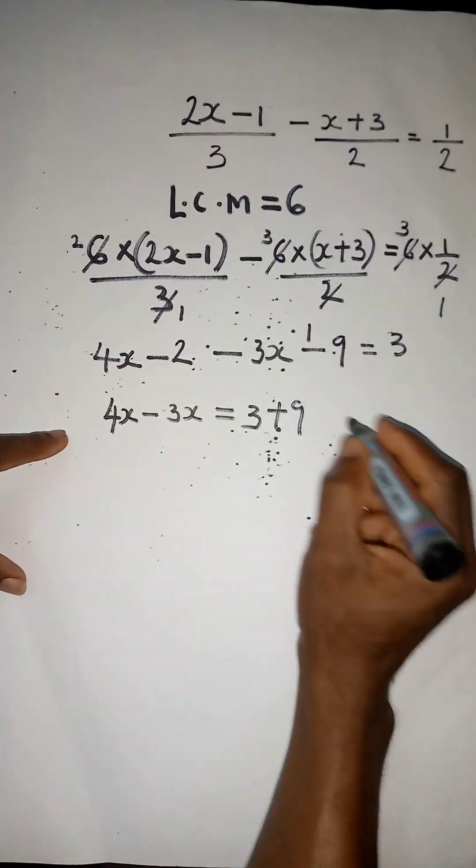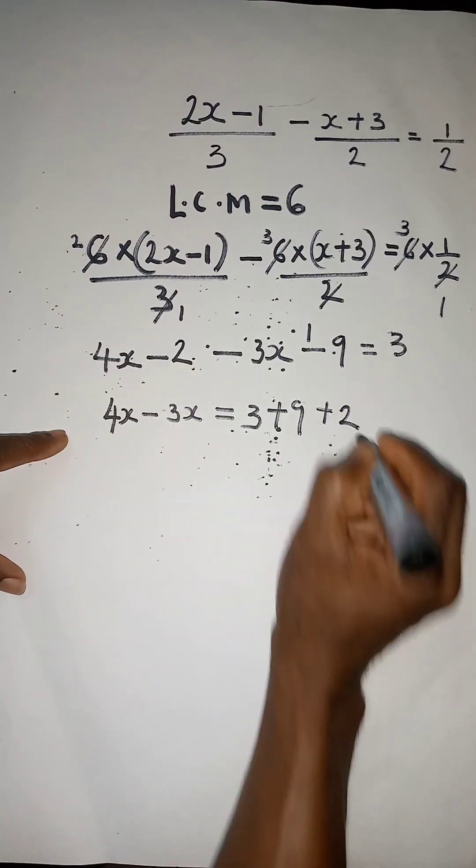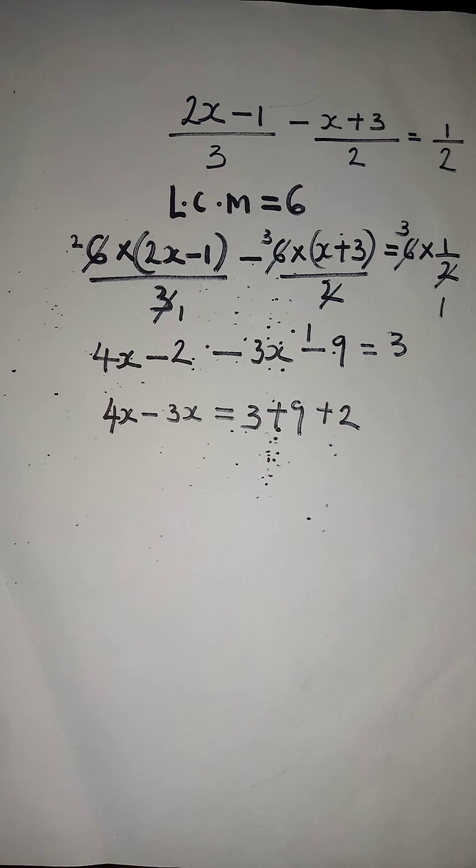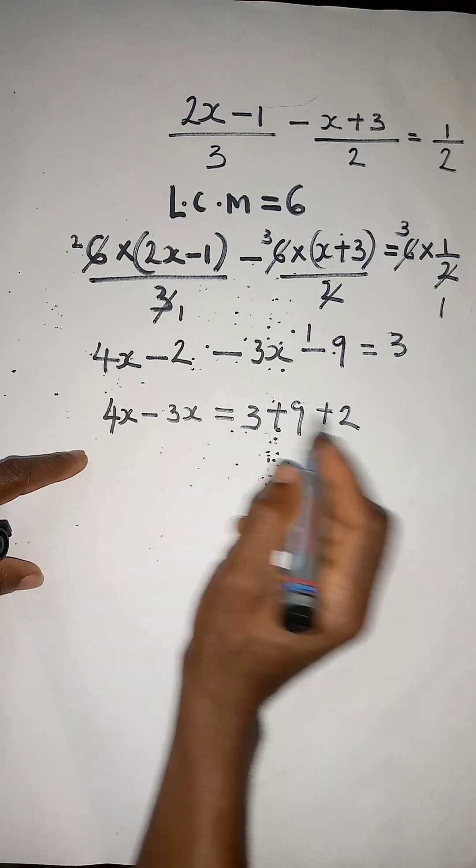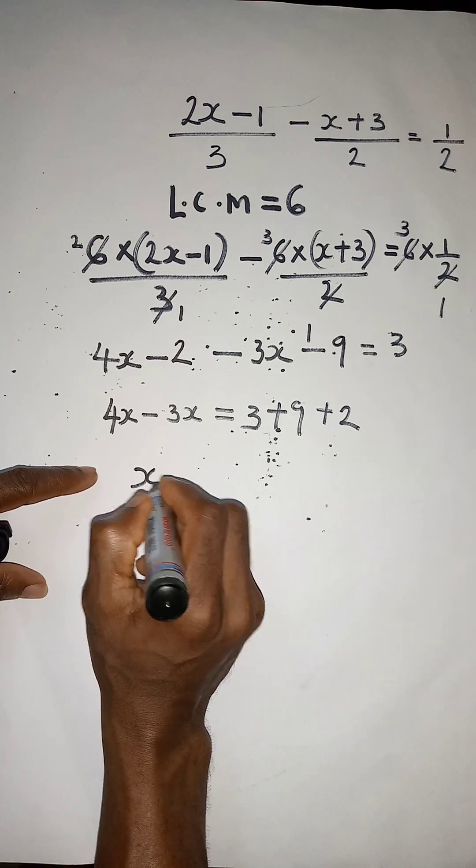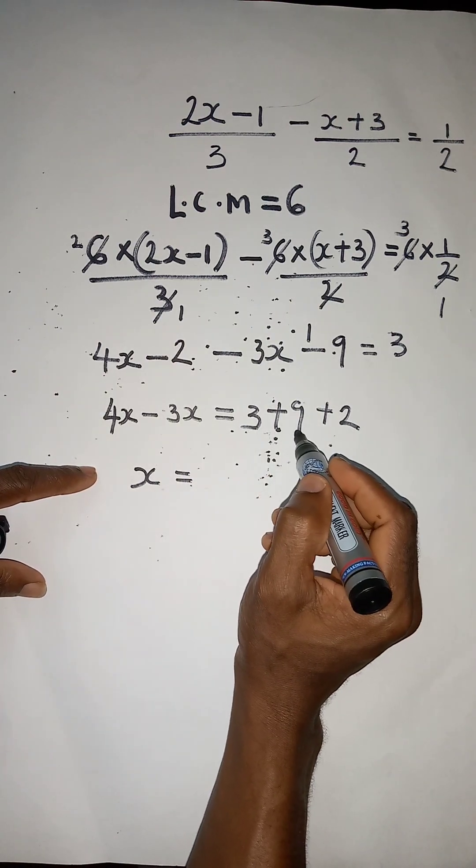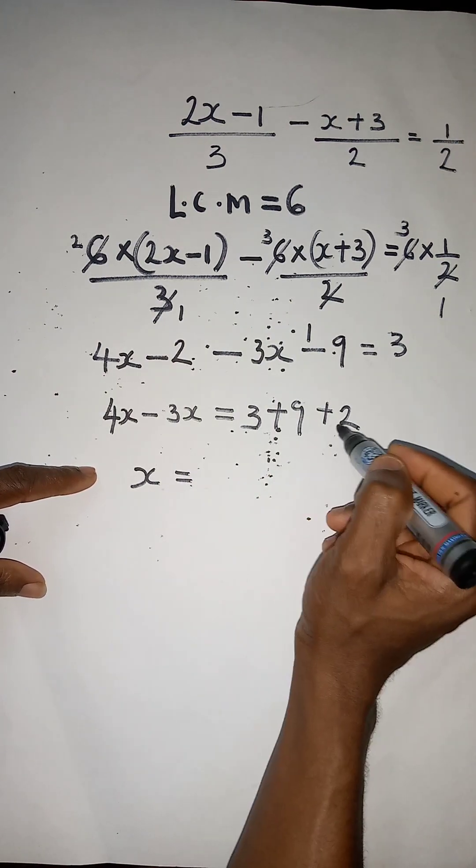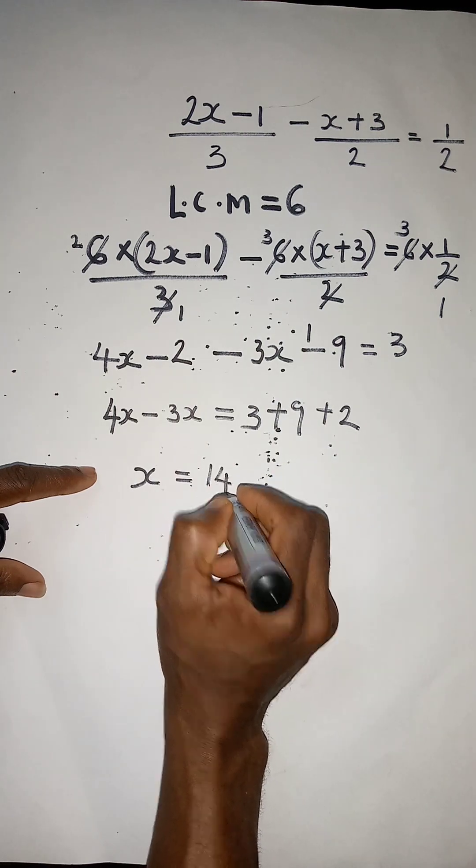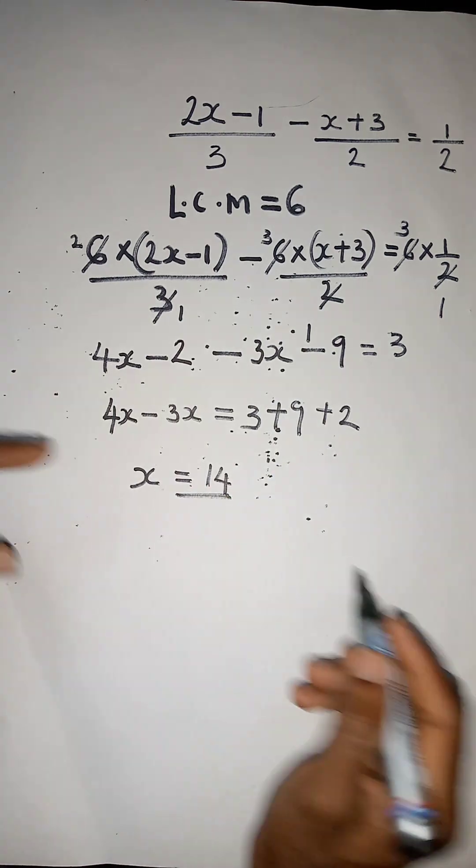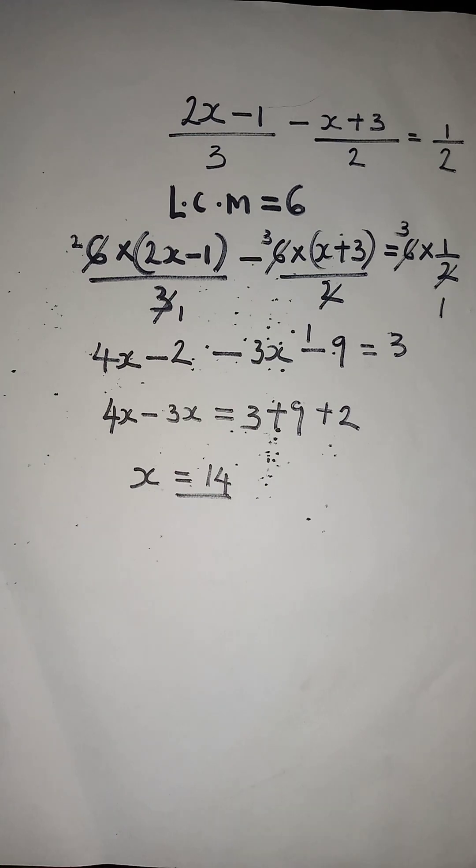So let's simplify. 4x minus 3x, we have x equal to 3 plus 9 gives 12, 12 plus 2 gives 14. So here from the equation, x is equal to 14.